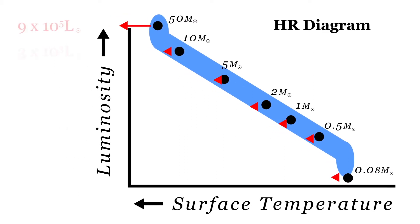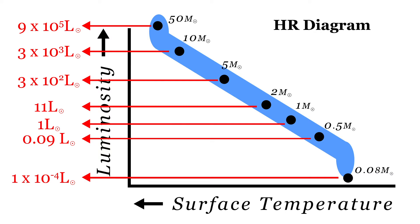It is interesting to note the luminosity values for these stars with known masses, which is described by the mass-luminosity relation: L equals m to the 3.5 in solar units. Note that this is a rapidly growing function. A 2 solar mass star has a luminosity of over 11 solar luminosities, while a 5 solar mass star has a luminosity of 280 times that of the Sun. So stars have a much greater range of luminosities than masses, ranging from over a million solar luminosities down to one ten-thousandth of a solar luminosity.